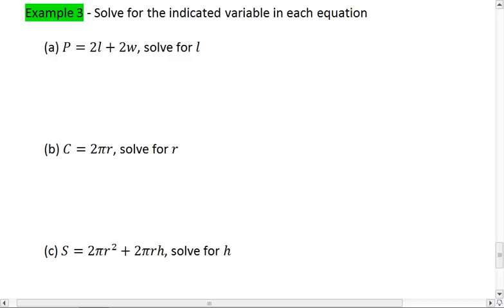Okay, in example A, we have P equals 2L plus 2W. This is actually your formula for perimeter of a rectangle. But we're going to solve for L.